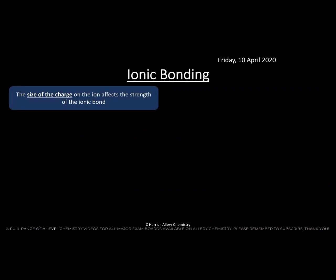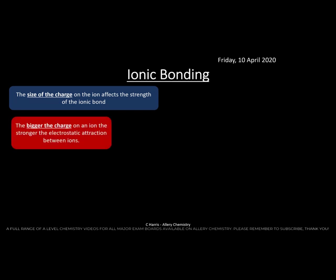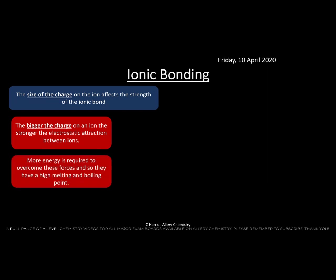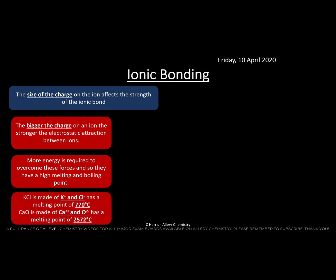The size of the charge on an ion affects the strength of the ionic bond. The bigger the charge, the stronger the electrostatic attraction between the ions, so more energy is required to overcome those forces and they have higher melting and boiling points. For example, KCl is made of K⁺ and Cl⁻ (single charges) with a melting point of 770°C, whereas calcium oxide (Ca²⁺ and O²⁻) has larger charges and a much higher melting point.